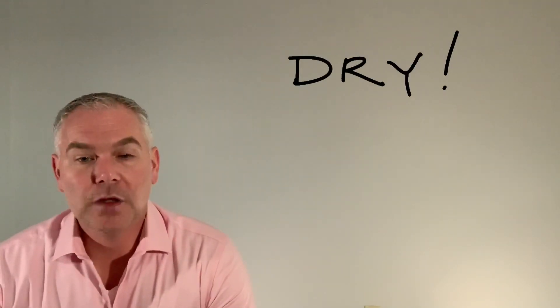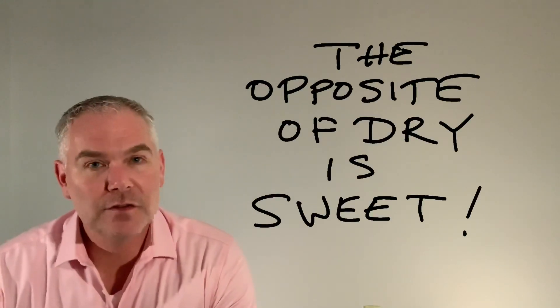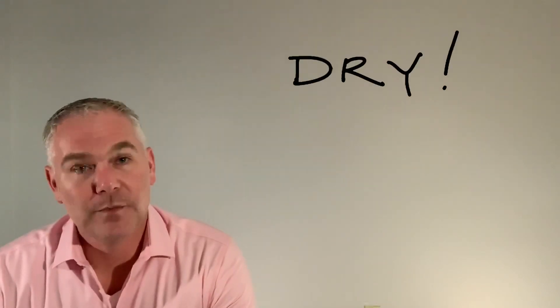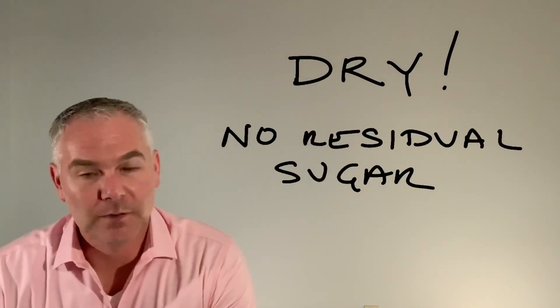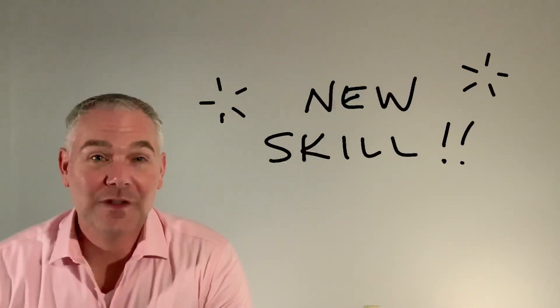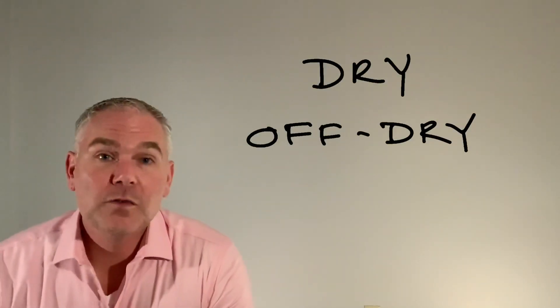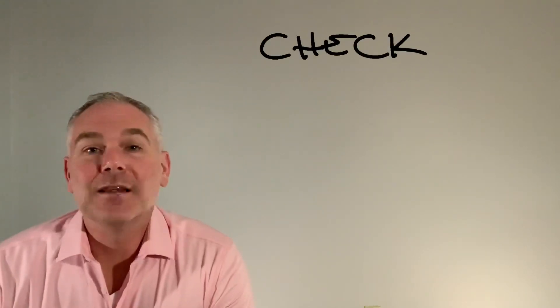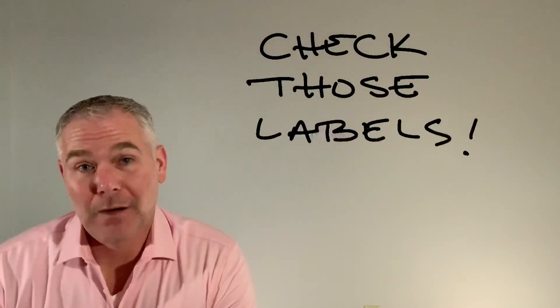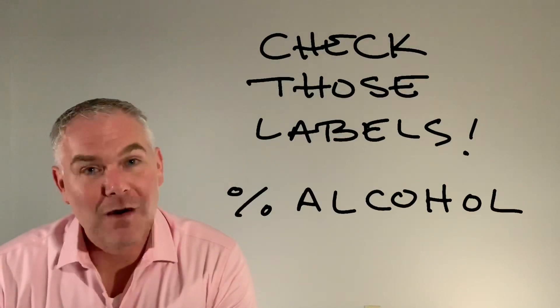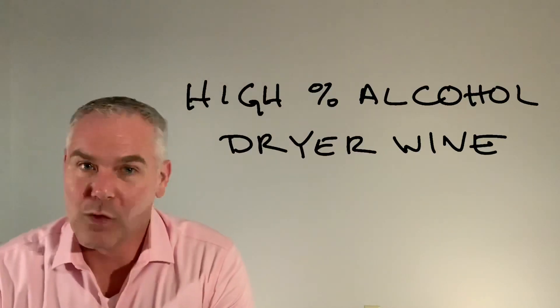It's time to wrap up this segment. We learned the definition of dry, and we learned that the opposite of dry is sweet. We also learned where this comes from: residual sugar. We also have a new skill so that we can find a dry rosé, an off-dry Chenin Blanc, or a sweet Riesling by looking at the back of the bottle, finding the percentage of alcohol, and remembering: the higher the alcohol, the drier the wine.